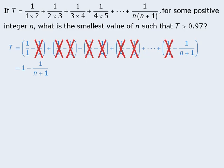From here we can further simplify the right hand side by rewriting 1 as n plus 1 over n plus 1 and then subtracting the numerators to get n over n plus 1. So we have now demonstrated that T is equal to n over n plus 1.